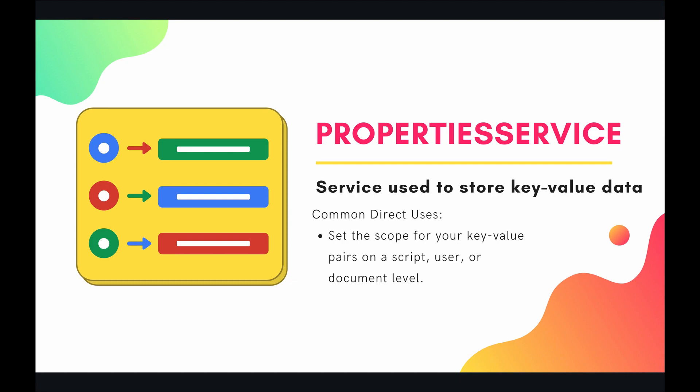We're going to see a lot of examples of this in the upcoming videos. Some of the direct use cases of the property service, if you were to access this as the parent class PropertiesService, would be if you needed to set the scope for your key-value pairs on a script, user, or document level. We're going to see an example of this in the very next episode. But before we do that, let's jump into the code and make sure that we're all starting from the same starting block.